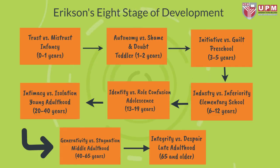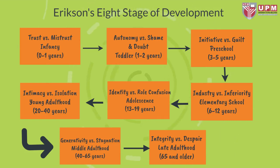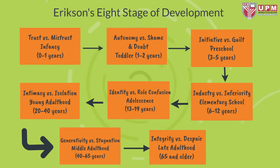Personality and socio-psychological development by Erik Erikson. Erikson's eight stages of development: First, trust versus mistrust — infancy, 0–1 years. Second, autonomy versus shame and doubt — toddler, 1–2 years. Third, initiative versus guilt — preschool, 3–5 years. Fourth, industry versus inferiority — elementary school, 6–12 years. Fifth, identity versus role confusion — adolescence, 13–19 years. Sixth, intimacy versus isolation — young adulthood, 20–40 years. Seventh, generativity versus stagnation — middle adulthood, 40–65 years. Eighth, integrity versus despair — late adulthood, 65 and older.